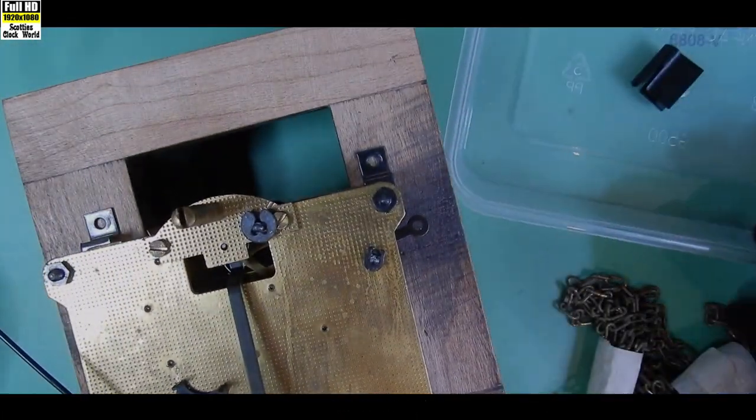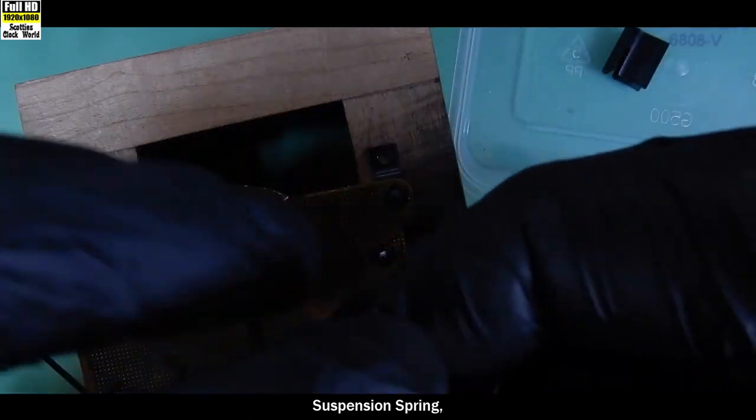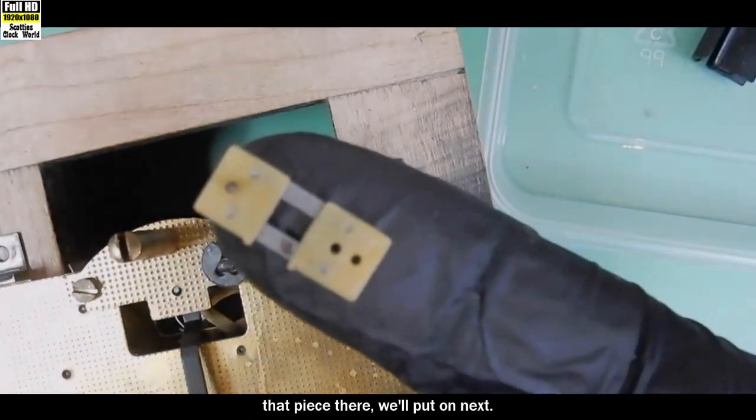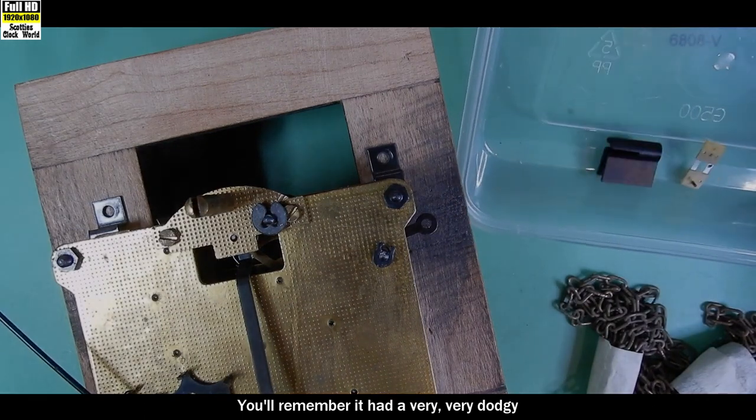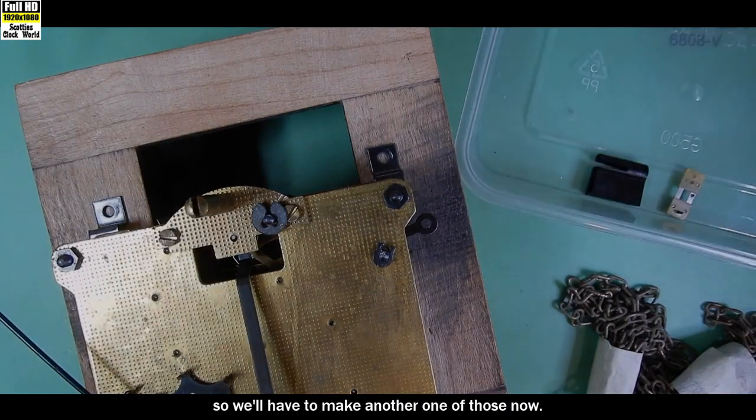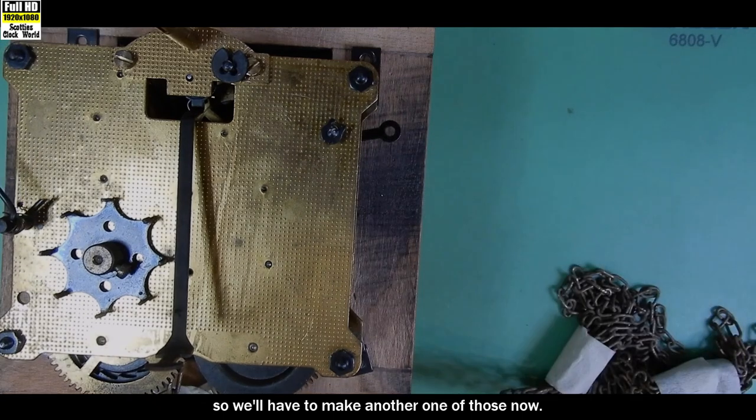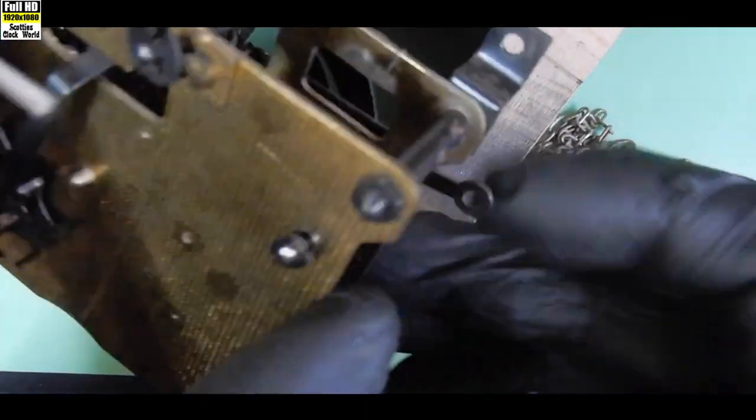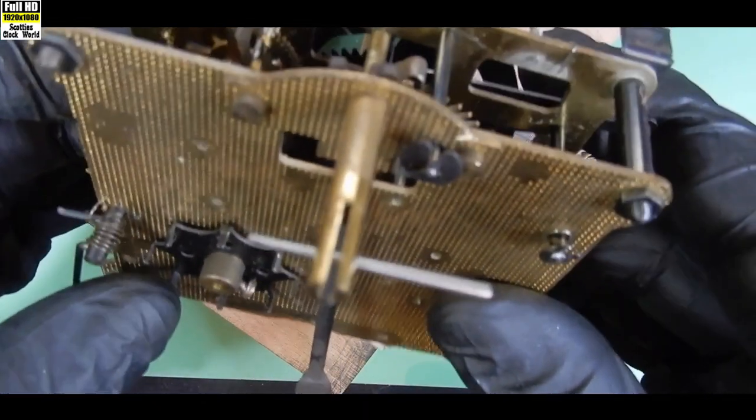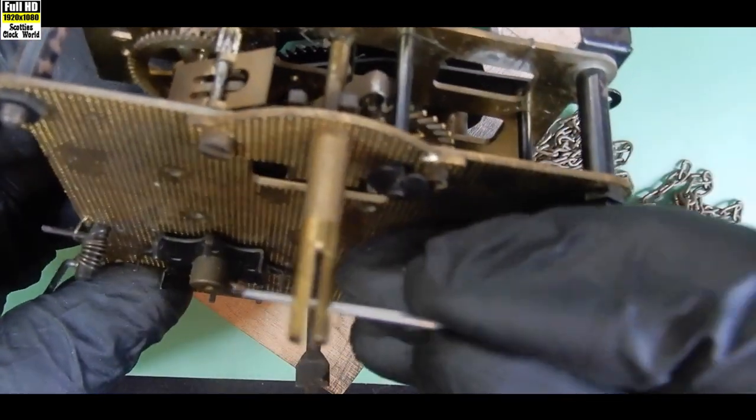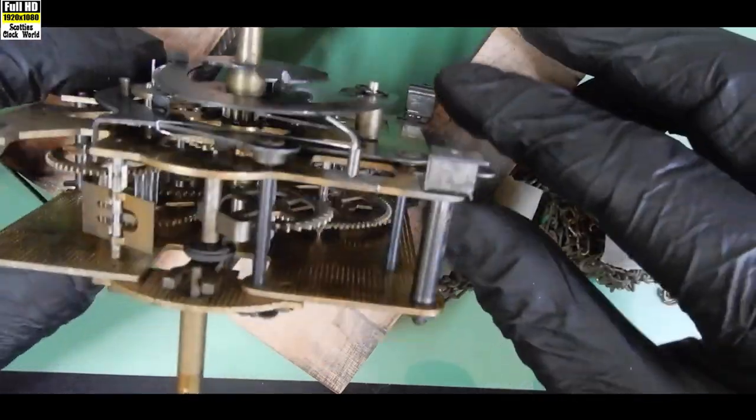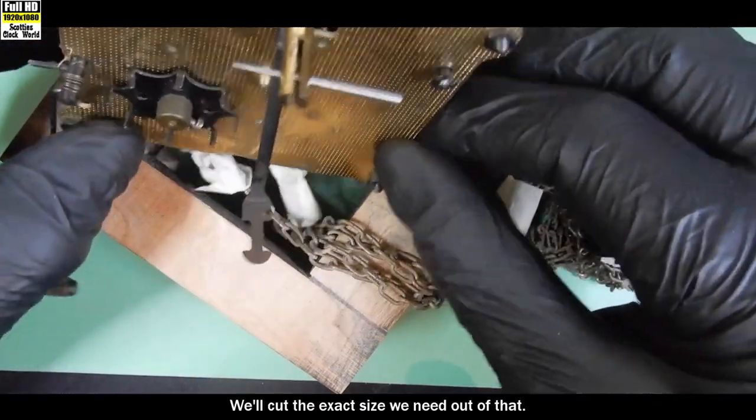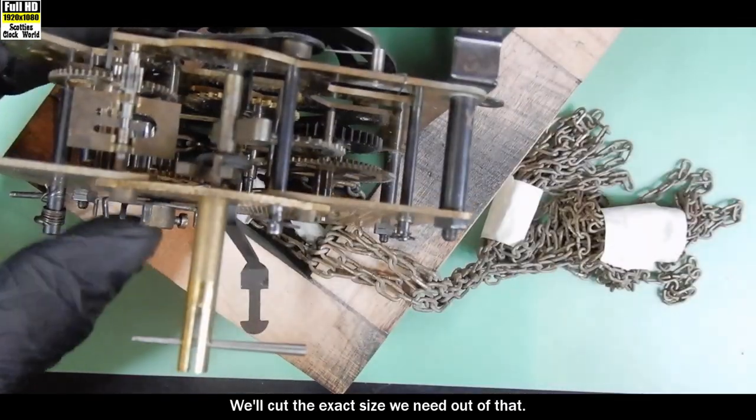We've got suspension spring. A piece here we'll put on next. You'll remember it had a very, very dodgy taper pin on, so we'll have to make another one of those now. This is the size taper pin we need. We'll cut the exact size we need out of that.